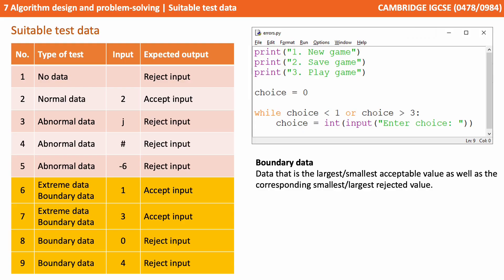Boundary data on the other hand is the largest and smallest acceptable values as well as the corresponding largest and smallest rejected values. So one and three are the largest and smallest acceptable values — that's why they're both boundary and extreme data. But boundary data also includes zero and four, as they're the other side of the valid boundaries one and three.